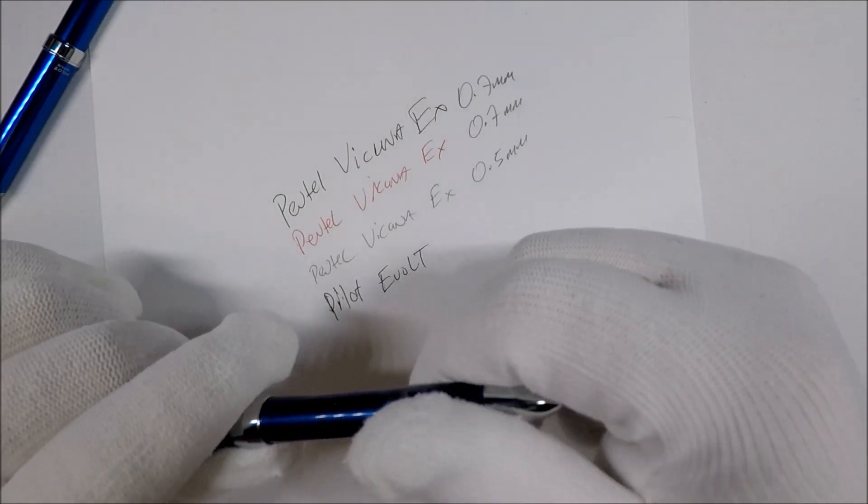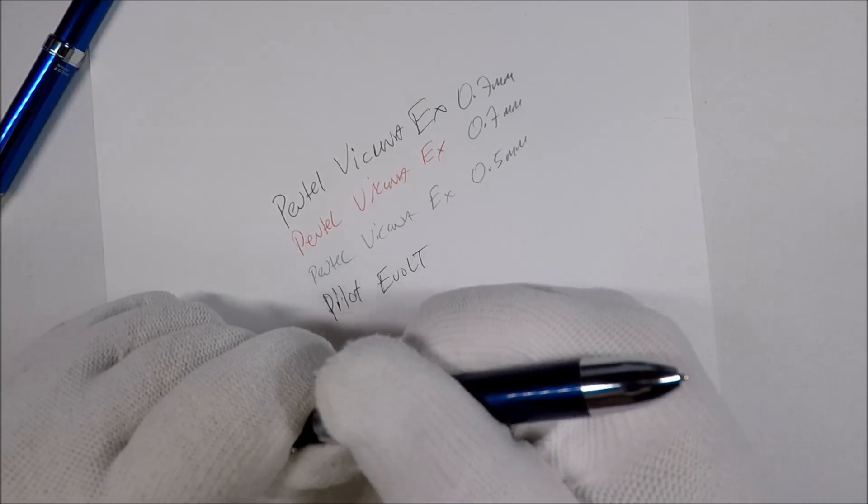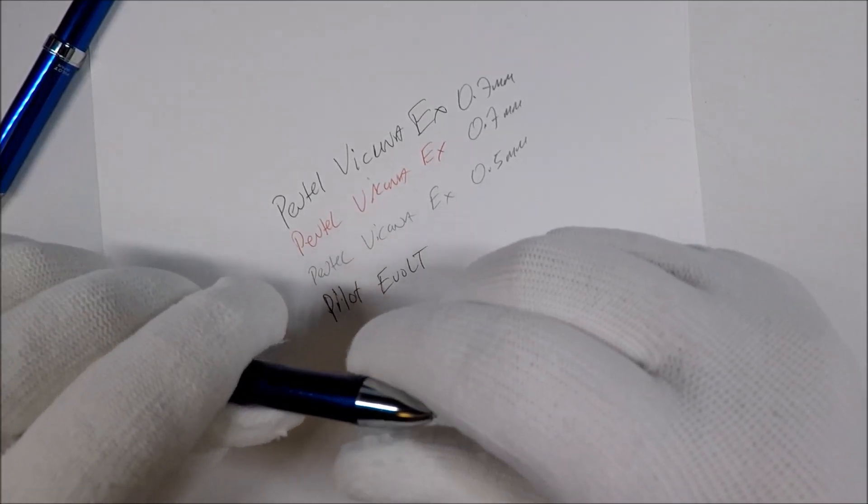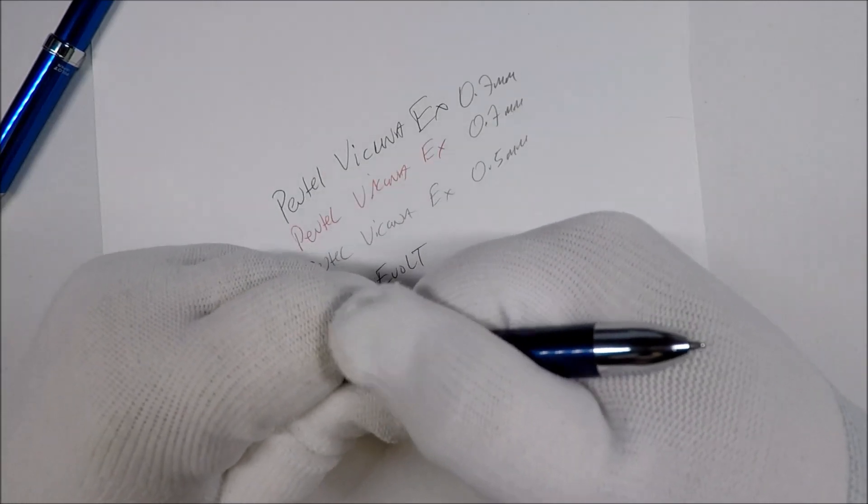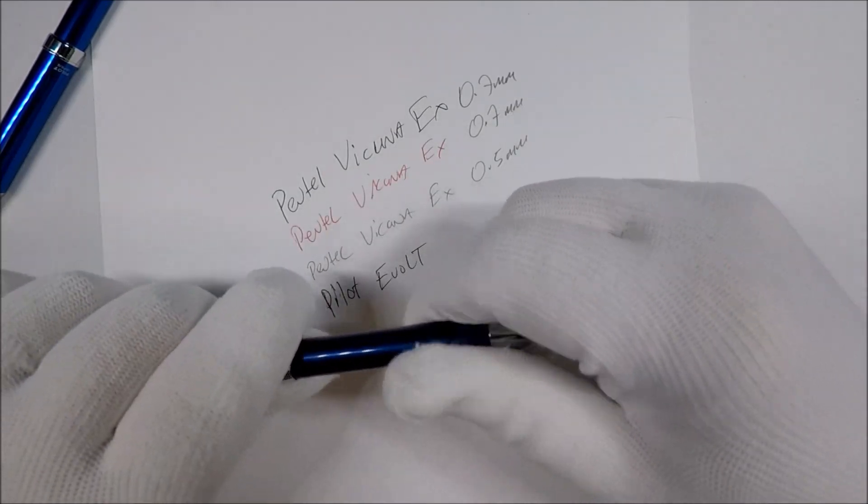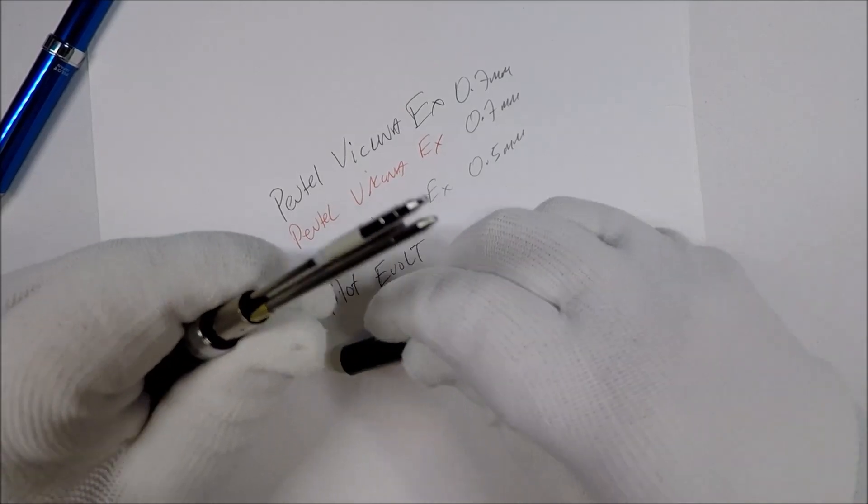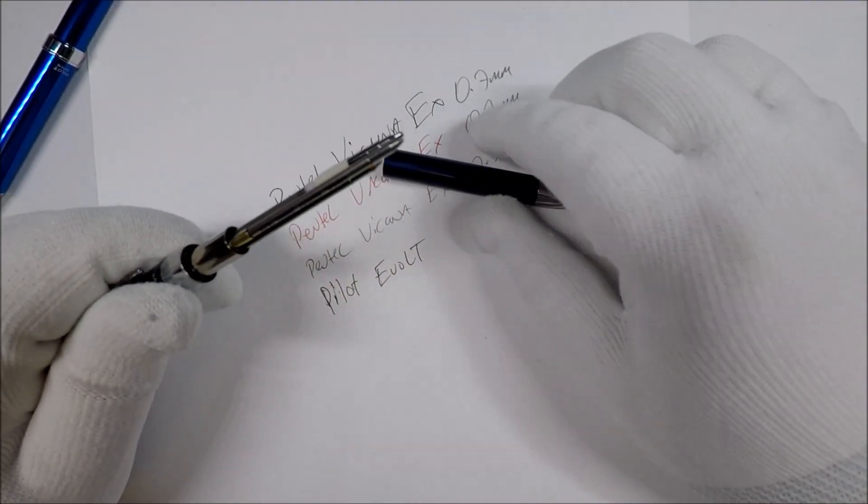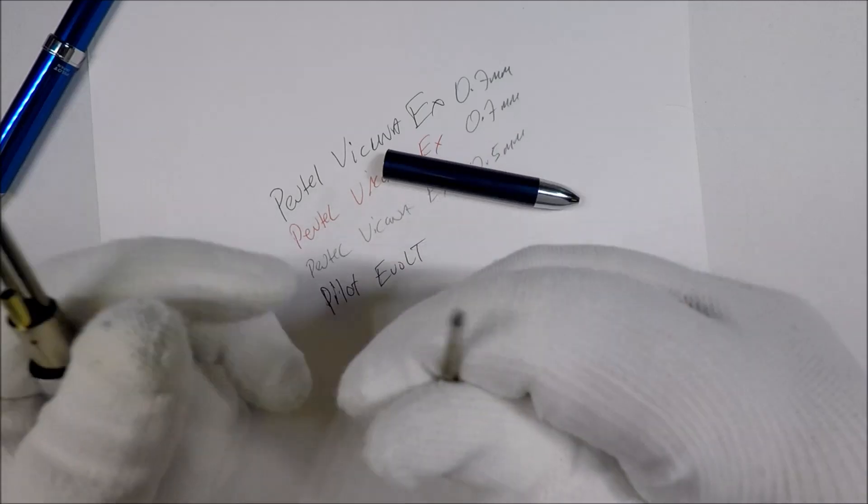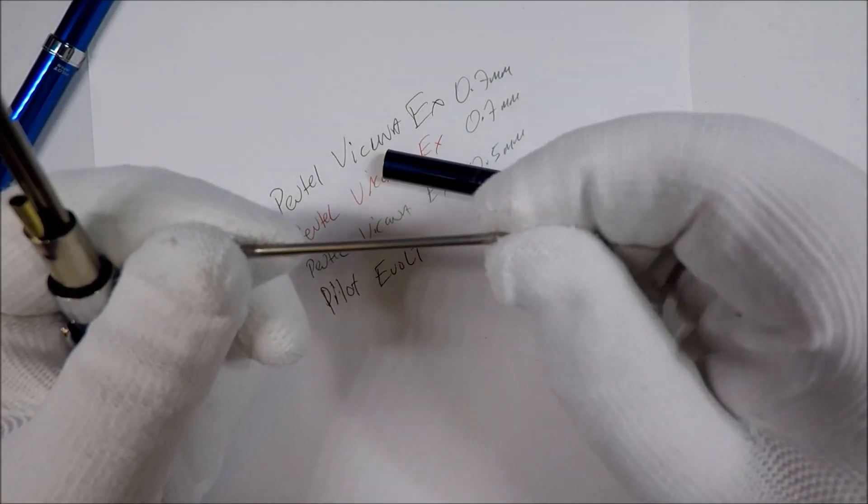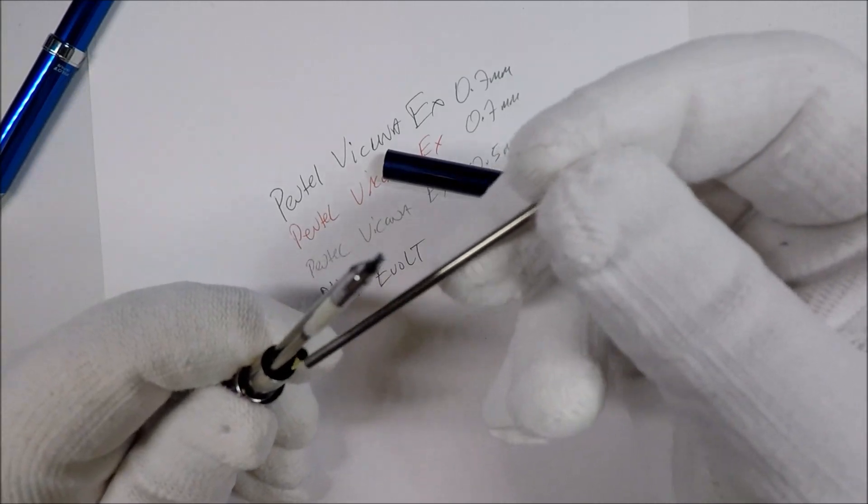So how do we get into the guts of this thing? I'm guessing you don't twist, so maybe you pull or you're going to screw. There we go. You just pull it off and this looks like normal D1 refills. You should be able to pretty much use whatever you want refill wise if you have some that you like.